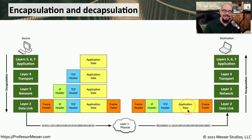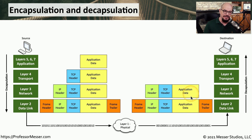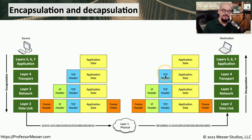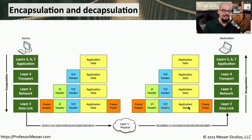The destination device, though, needs the application data that's inside — it doesn't need all of this other information. So it will begin decapsulating this information, removing the frame headers, removing the IP header, and ultimately removing the TCP header so that it can then access the application data. And finally, we've been able to transfer this data from the source device through the encapsulation process, the decapsulation process, and be able to receive the application data at the destination.